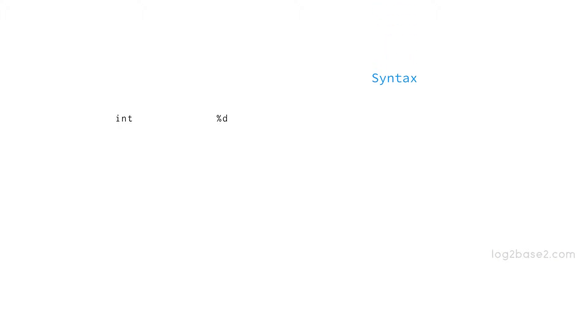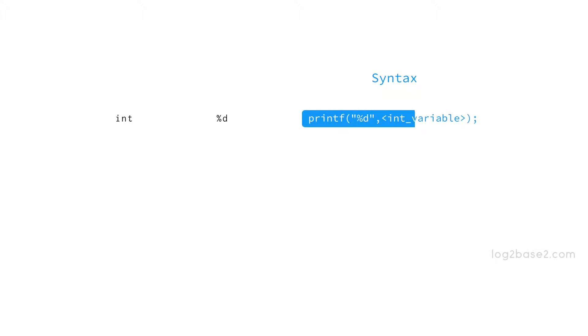For integer, we have %d, and the syntax to print an integer variable is: printf("%d", name_of_integer_variable).